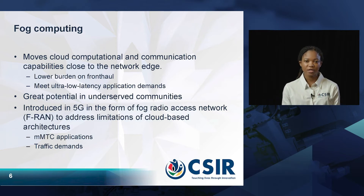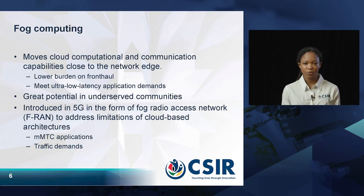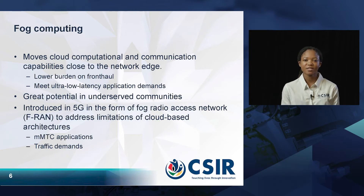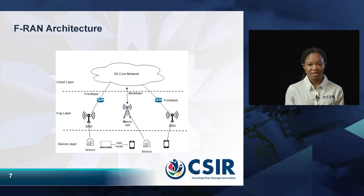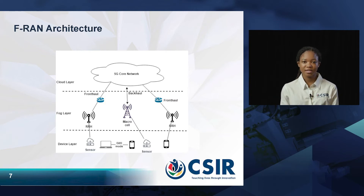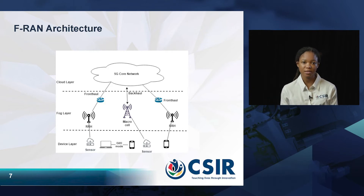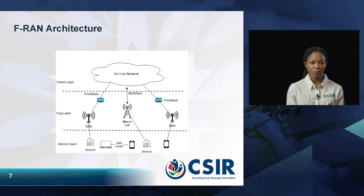In the 5G architecture, fog computing is introduced in the form of Fog Radio Access Network, or FRAN, as a means to meet the demands of massive IoT applications and the traffic they generate, which the conventional cloud-only model is unable to deal with. The FRAN architecture features a fog layer in the middle which introduces edge devices embedded with computing, storage, control, and networking capabilities, widely distributed between the 5G core network and the IoT layer.